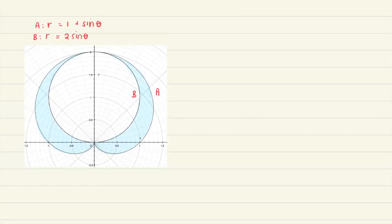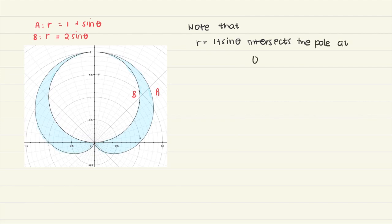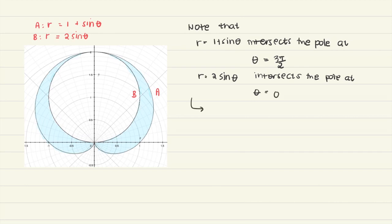As a side note on what happens at the pole: similar to before, both curves pass through the pole but not at the same theta. The curve r equals 1 plus sine theta intersects the pole when theta equals 3 pi over 2, since sine theta would equal negative 1. Meanwhile, r equals 2 sine theta intersects the pole when theta equals 0, since sine 0 is 0. So they do not simultaneously intersect the pole.